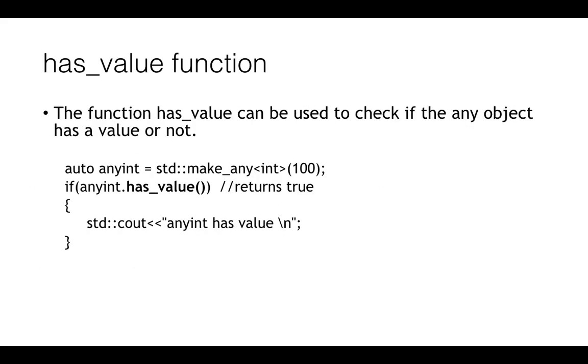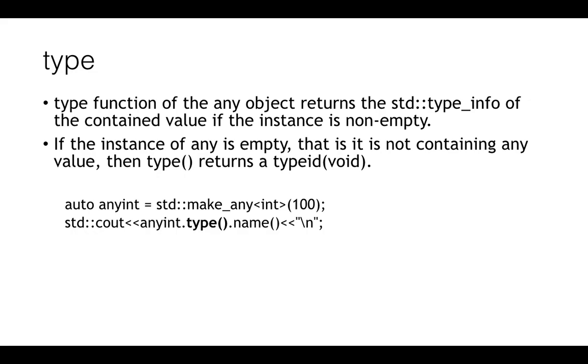Another important function is has_value, which is an observer that tells you if the object is holding any value or not. You can use it like any other normal function on any C++ class. And similarly is the case with type.